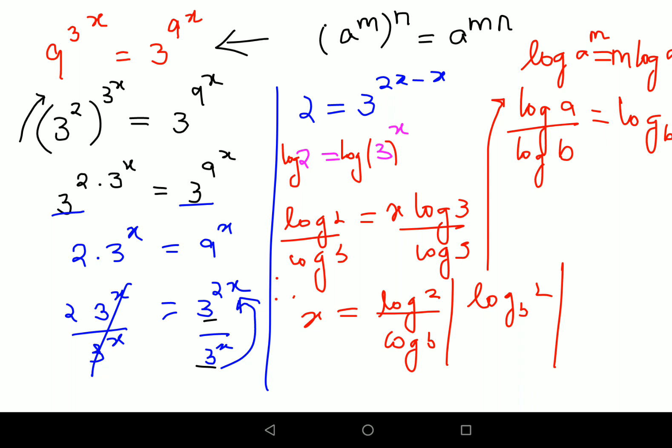Now if they had given you the log book, you can find the values. The final answer for value of x is 0.631. So I hope you've understood how to solve these kind of questions. That's it for today, I will see you in the next video.